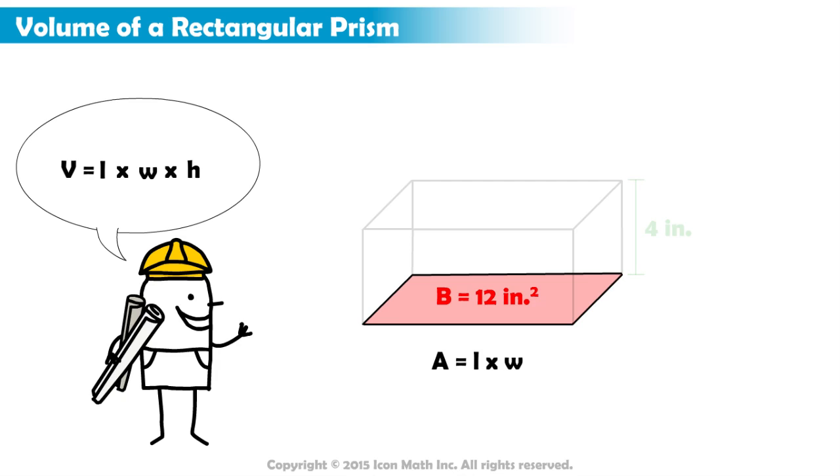So, the base B of this figure is equal to the product of the length and width, which we write as B equals L times W. This means we can remove the L times W part in the formula V equals L times W times H and replace it with B.